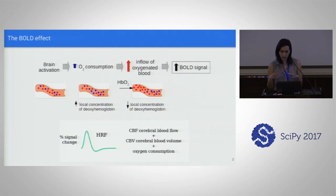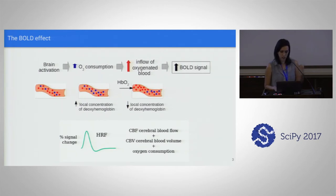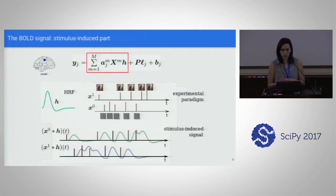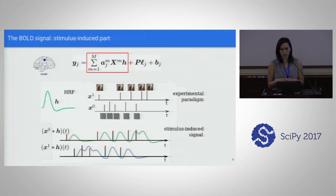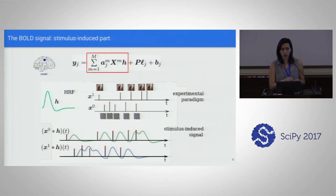All these physiological processes happen at the same time, and we usually describe these changes with the so-called hemodynamic response function, whose shape you can see here. The BOLD signal is a very noisy signal, and the part we are interested in is the stimulus-induced part — the variations that happen after brain activity occurs. We know the hemodynamic response function and the timings of the stimuli, encoded in X. For example, X0 is a visual stimulus — a checkerboard — and X1 would be pressing a button, a motor task.